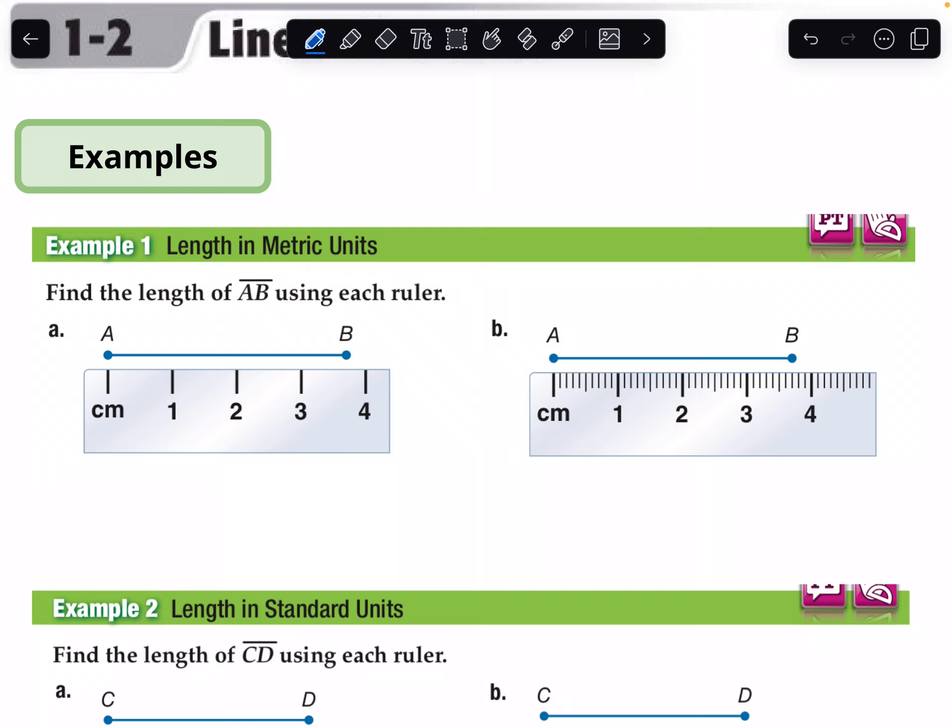On the first ruler, point A is on the zero centimeter mark. Point B here is between three and four. There is no further mark, so the best measurement we can get, the most accurate measurement, is to approximate to the nearest centimeter. We will say that length AB is approximately equal to four centimeters, since B is closer to four than to three.